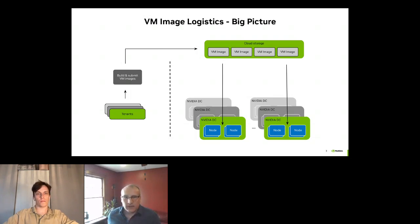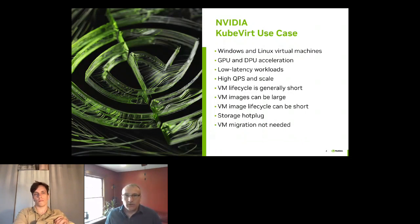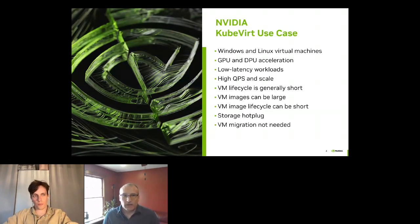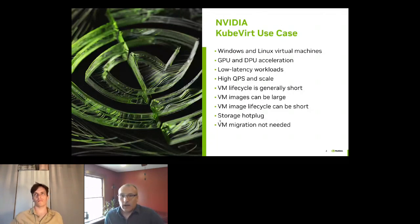Talking about our high-level use cases at NVIDIA, we have workloads that need to run on both Windows and Linux, but not all of these workloads are particularly well-suited for a container. Imagine applications such as a VDI-like experience where you're presenting virtual desktops or cloud gaming around the world at the scale of tens of thousands of nodes. We're using Kubernetes, KubeVirt, and a lot of other open source components. Most of these workloads require some form of acceleration — GPU acceleration naturally, and DPU network offloading to handle a lot of the network function.